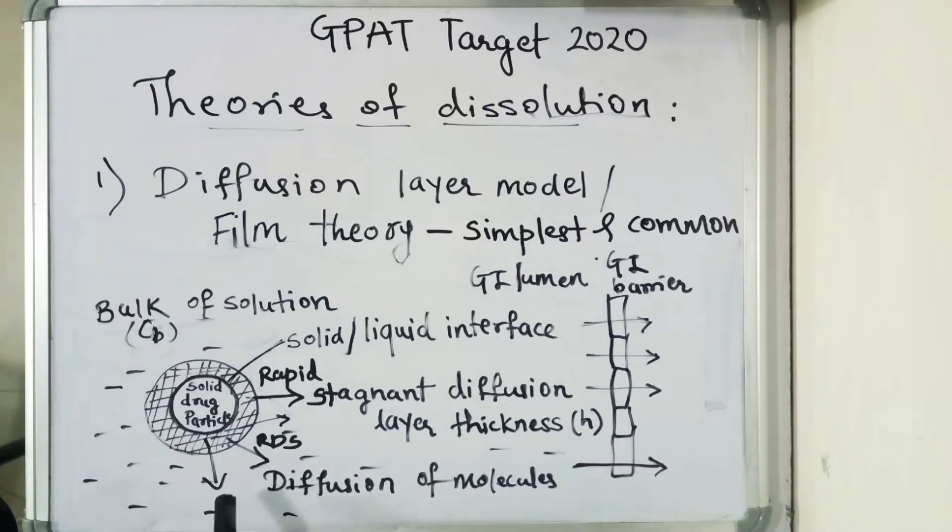Second step is the diffusion of the solute from the stagnant layer to the bulk of the media. This step is slower and therefore is the rate-determining step, and this model is known as the diffusion layer model.